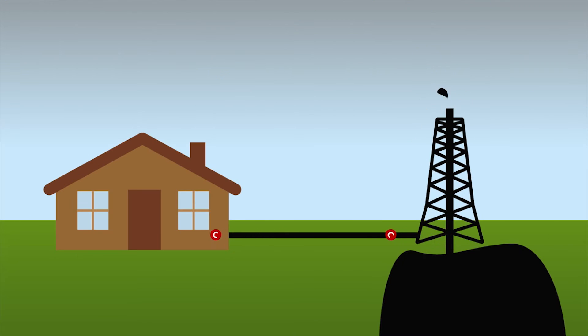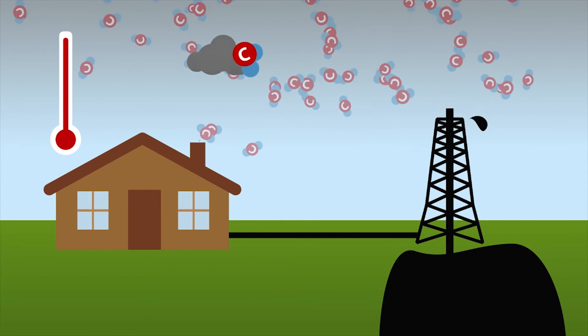With fossil fuels, however, the situation is completely different. Carbon from oil, natural gas or coal comes from deep inside the Earth's crust, is transported across far distances, burned and increases the CO2 in the atmosphere. This process is the main cause of global warming.